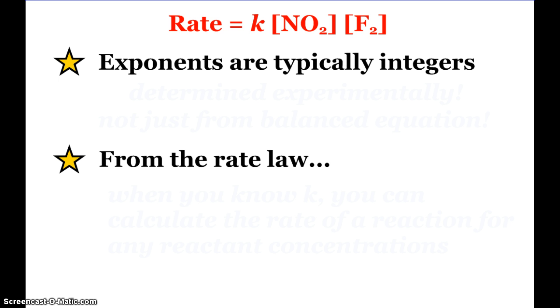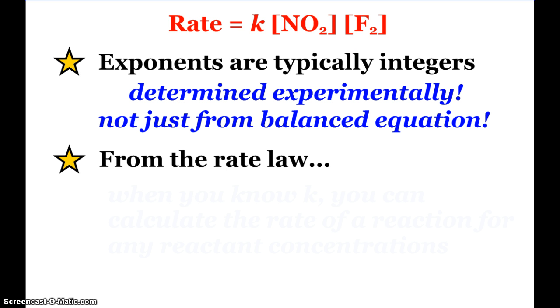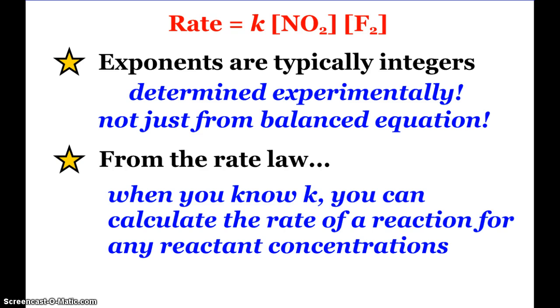Looking at our rate law again, the exponents are typically integers and are determined experimentally. You don't just take them from balanced equations. A lot of times the coefficients in the balanced equation match our rate law, but that's just a coincidence. These exponents are determined experimentally, and from our rate law when we know the rate constant, we can calculate the rate of a reaction for any reacting concentrations and vice versa.